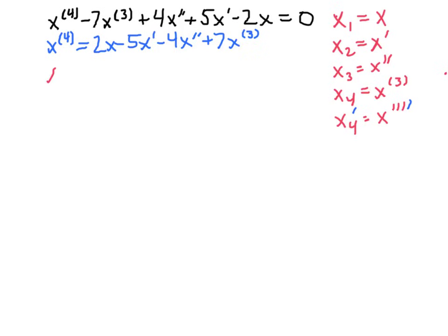The fourth derivative is the same as x sub 4 prime, and then we have 2x sub 1, minus 5x sub 2, minus 4x sub 3, plus 7x sub 4. That is our fourth order differential equation now written as a first order equation in terms of these new variables.